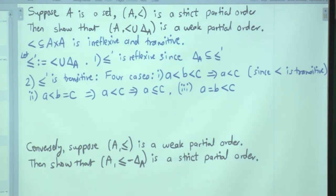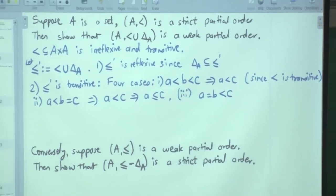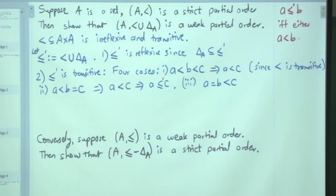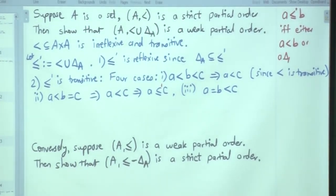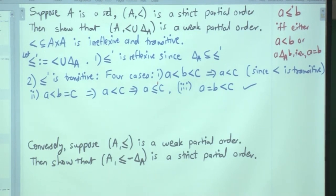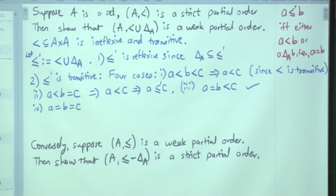A student asks what the union means. The union means: less-than is a subset of A cross A, delta_A is also a subset of A cross A, and we take their union. So A ≤' B if and only if either A < B or A delta_A B, i.e., A = B. Once you know this, the rest of the verification is straightforward. The fourth case is A = B and B = C, giving A = C and therefore A ≤' C.